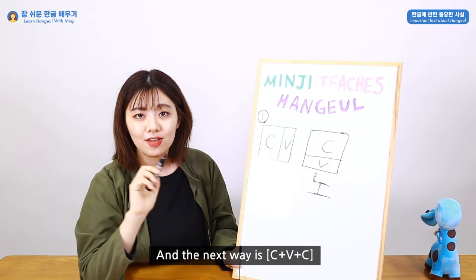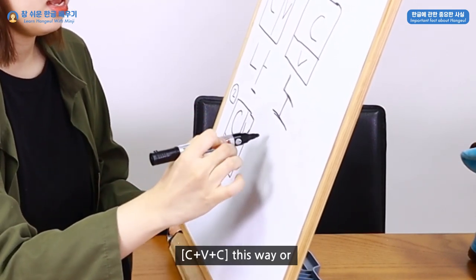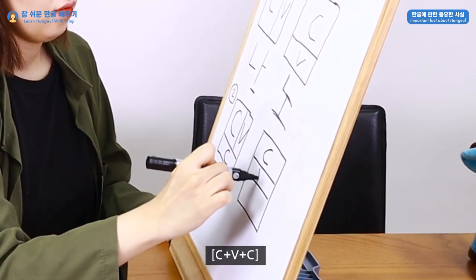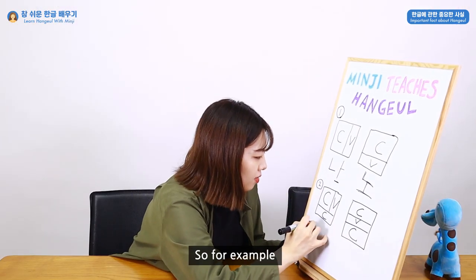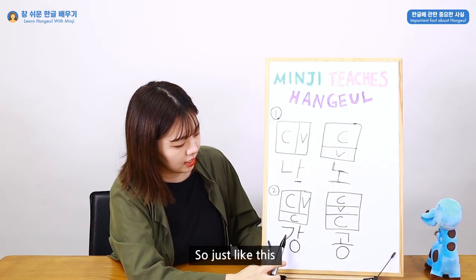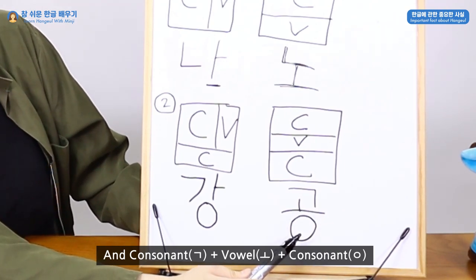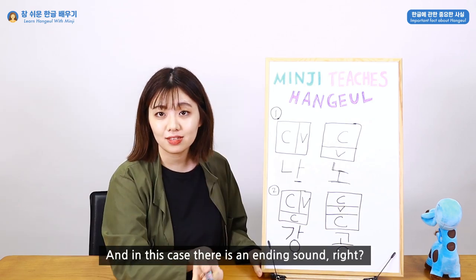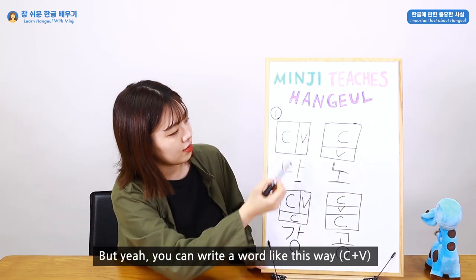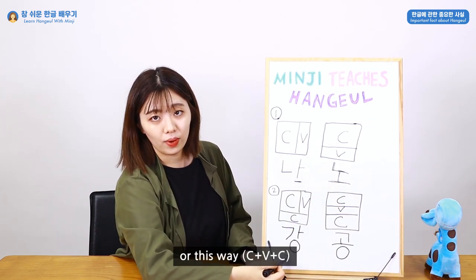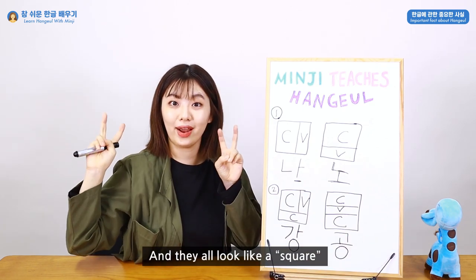The next combination is Consonant plus Vowel plus Consonant, written as CVC. It can also be arranged in two ways — either horizontally or vertically stacked. For example, 강 — consonant, vowel, consonant — means 'river.' And 공 — consonant, vowel, consonant — means 'a ball.' In this case there is an ending consonant sound, which in Korean we call 받침. You can write it either way, and they all form a square syllabic block shape.